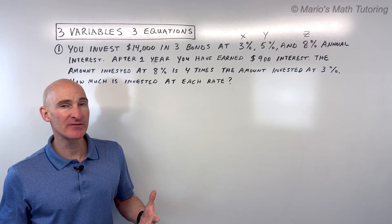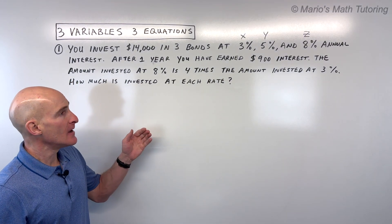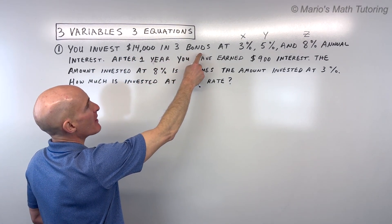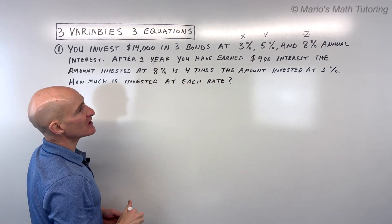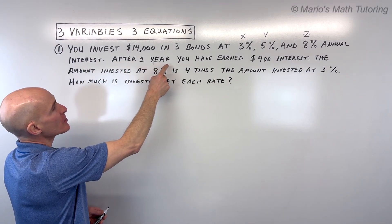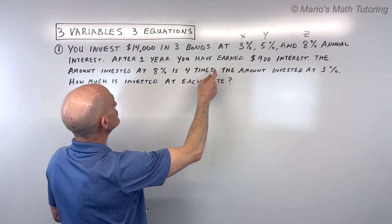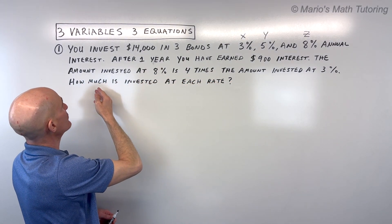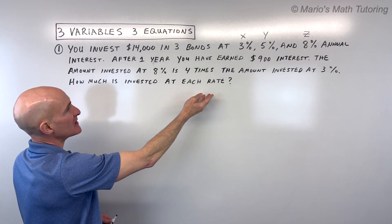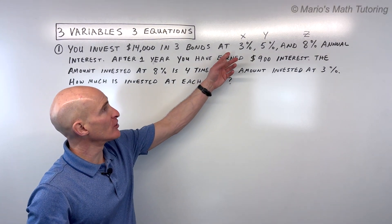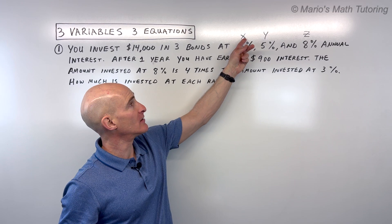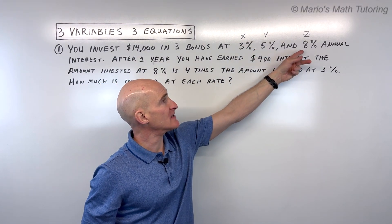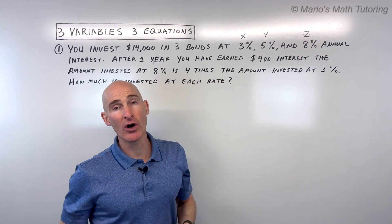The first example says: you invest $14,000 in three bonds at 3%, 5%, and 8% annual interest. After one year, you have earned $900 interest. The amount invested at 8% is four times the amount invested at 3%. How much is invested at each rate? Let the amount invested at 3% be X, 5% be Y, and 8% be Z.